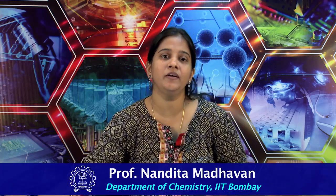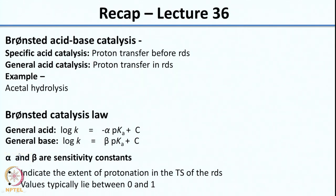In the last class we wrapped up acid-base catalysis, looking at both specific acid catalysis and general acid catalysis. Specific acid catalysis is where proton transfer occurs before the rate-determining step, whereas general acid catalysis is where proton transfer occurs in the rate-determining step. Specific acid means the acid is the protonated solvent — H3O+ — whereas general acid can be any acid added to the reaction medium.